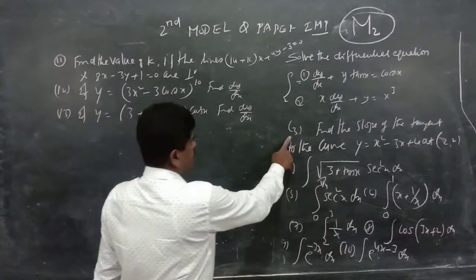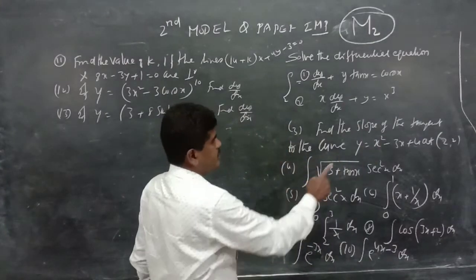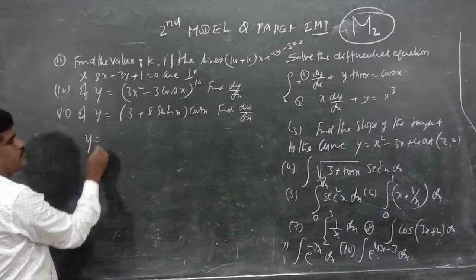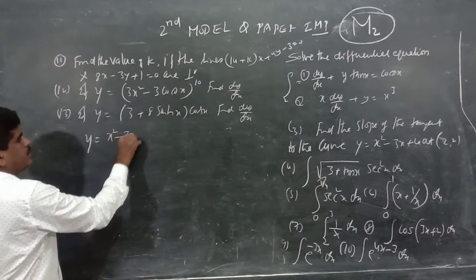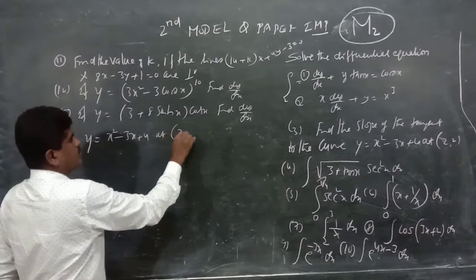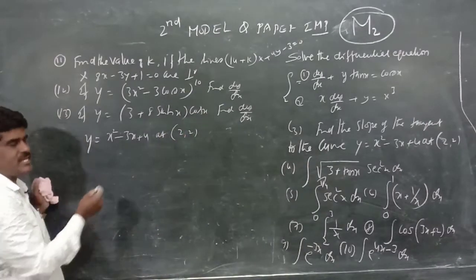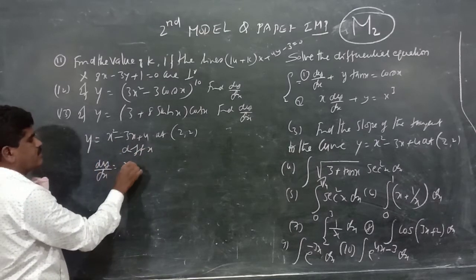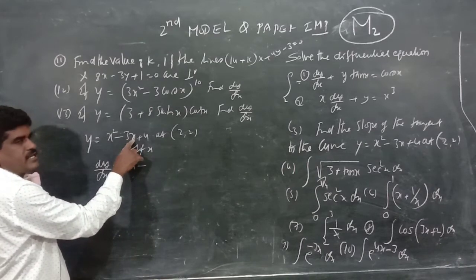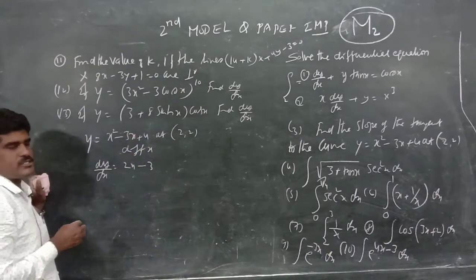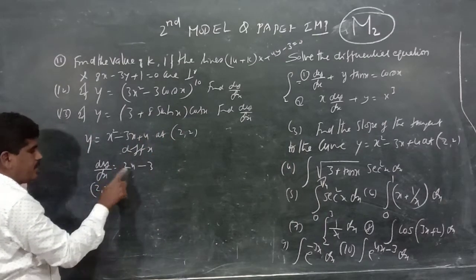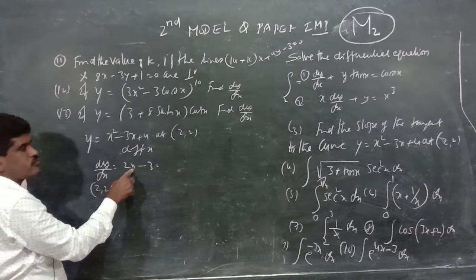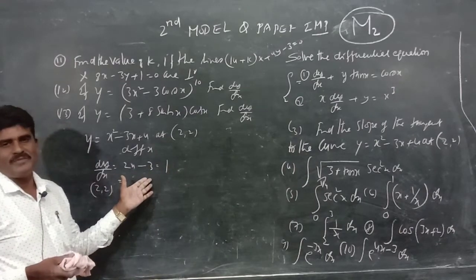Third problem: find the slope of the tangent to the curve y equals x² minus 3x plus 4 at the point (2, 2). Differentiate with respect to x: dy/dx equals 2x minus 3. At the point (2, 2), substitute x equals 2: dy/dx equals 2 times 2 minus 3 equals 4 minus 3 equals 1. The slope of the tangent is 1.